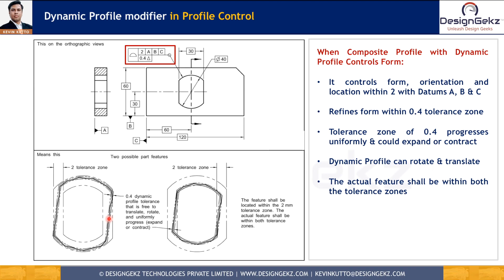If we wish to restrict rotation of the dynamic profile tolerance zone, we can add datum A and B into the FRTZF — feature relating tolerance zone framework. In that case, the 0.4 dynamic profile tolerance zone can still translate in any direction and uniformly expand or contract, but it can no longer rotate. Hopefully you now have a good understanding of the modifying symbols used in profile control.